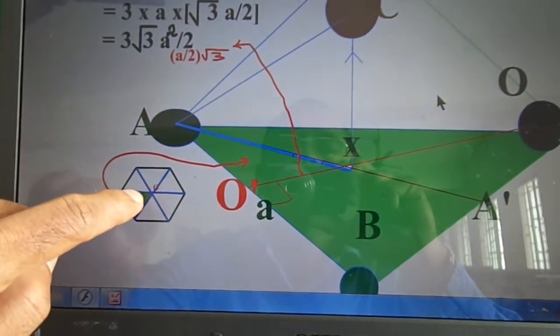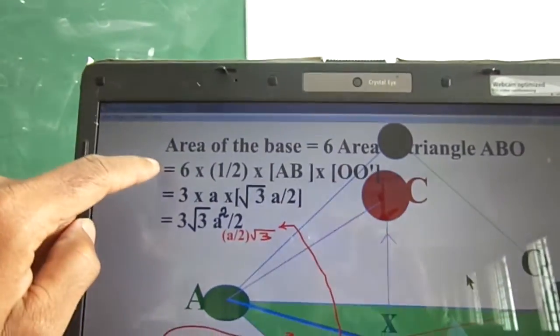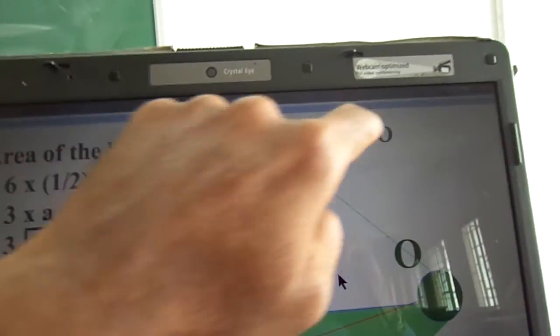Similarly, six more triangles are there. Totally six triangles. So six into half B, H. Area of the base, six into area of the triangle A, B, O.